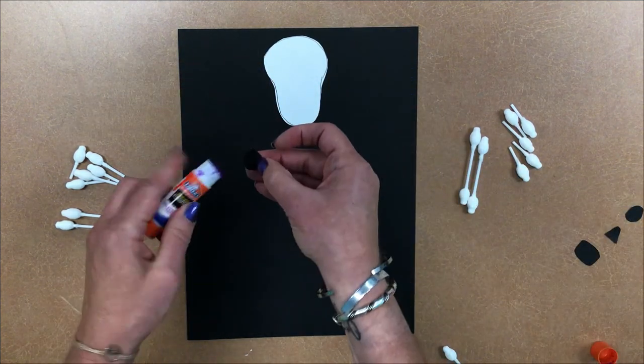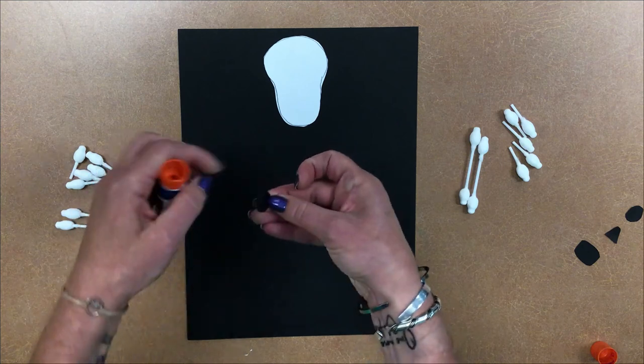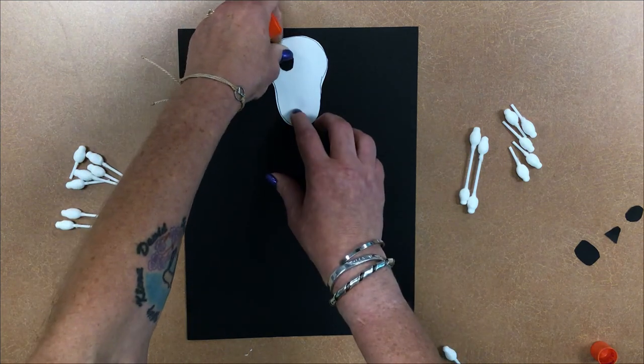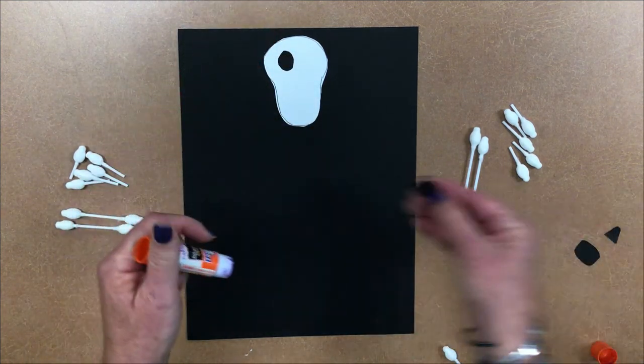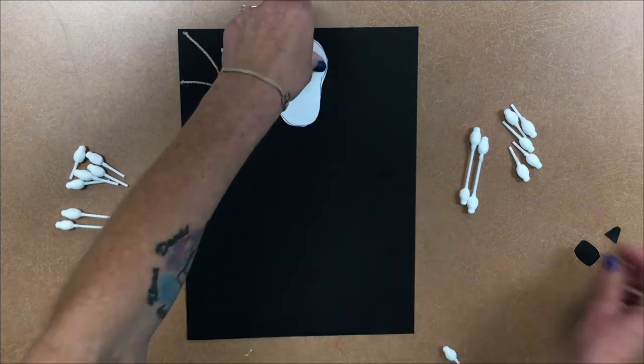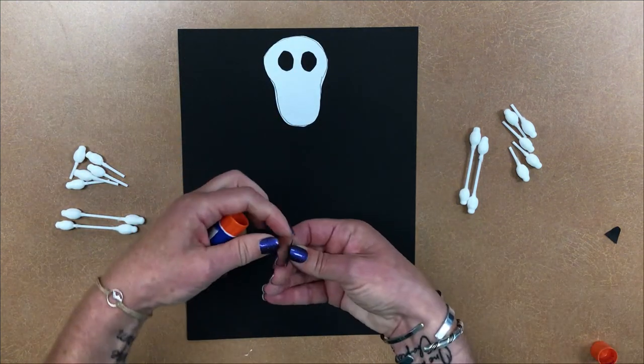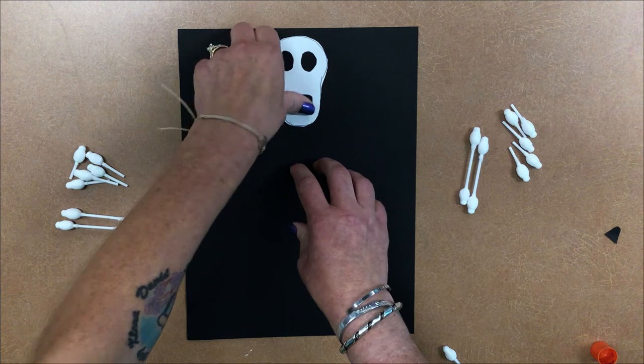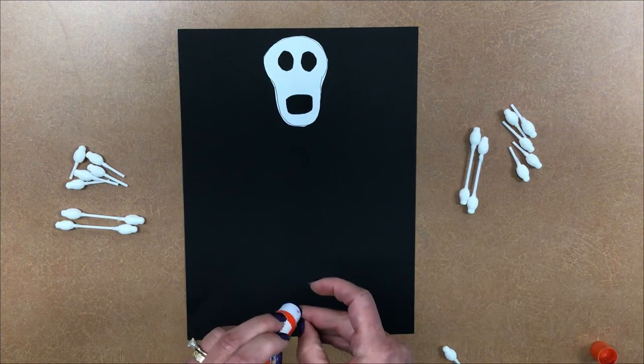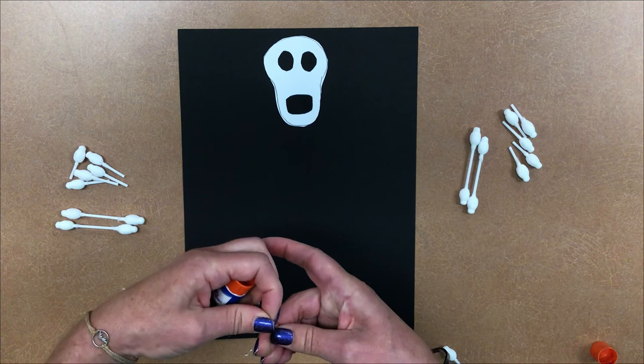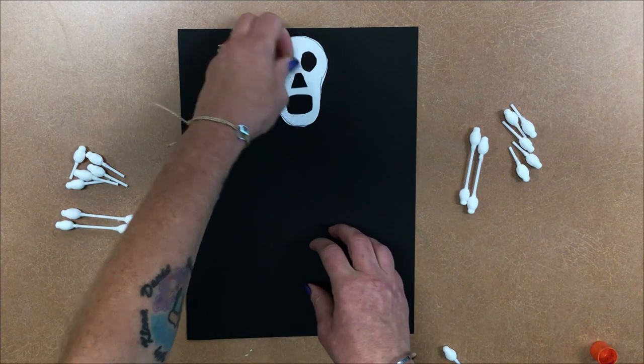Then, using black paper, just cut out some eyes. Or if you have googly eyes at home, you could use those to make it a little different. If you want to add some teeth to make like a smiling skeleton, like in our sample, you could go ahead and do that. I just used a little couple pieces of white paper for that.